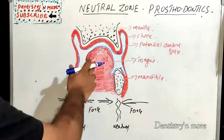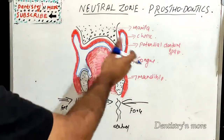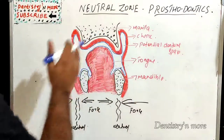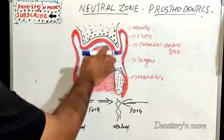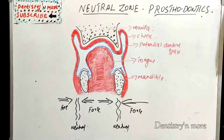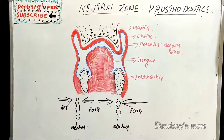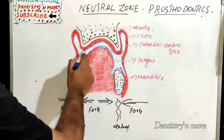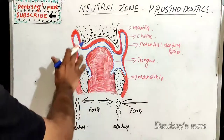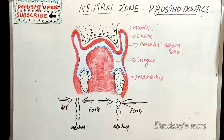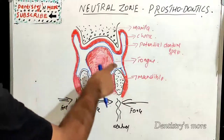Otherwise, muscle action will dislodge the denture or cause movement, affecting its retention. When tongue movement, lip movement, or cheek movement happens, there will be dislodgement. Many muscles are involved in all these areas, so the muscle action should be neutralized. That area is known as the neutral zone, where muscle actions cancel each other out. This picture of the oral cavity shows the maxilla, mandible, tongue, cheek muscles, and the blank space representing the potential denture space — where forces from the tongue and from the lips and cheeks are neutralized.